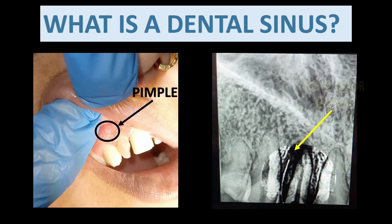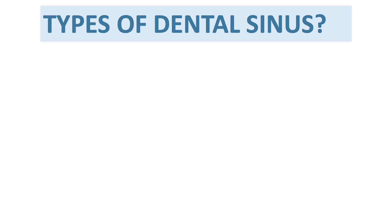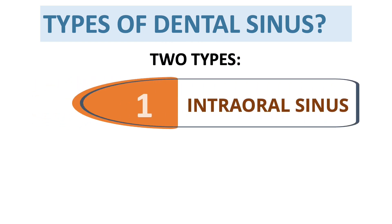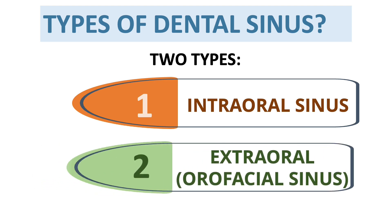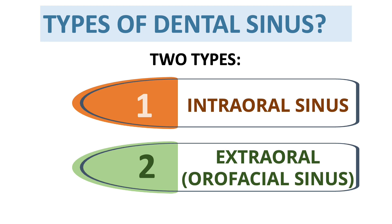This is a clinical image of dental sinuses. As you can see, a pimple-like swelling which is a sinus, and in the next figure you can see infection or abscess appearing as a radiolucency on X-ray. Now, the types of dental sinuses: there are two types — first is the intraoral sinus, which is present inside the mouth, and the second is the extraoral or orofacial sinus, which is present on the skin surface of the face or neck.